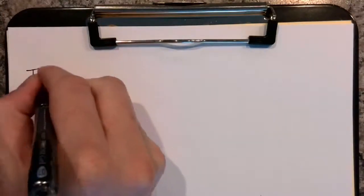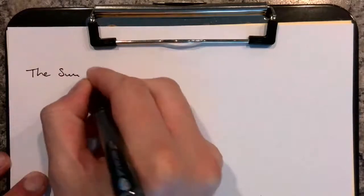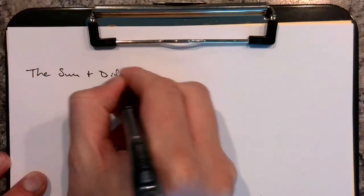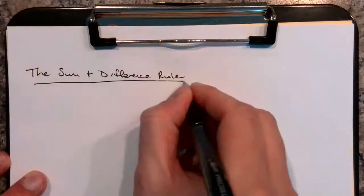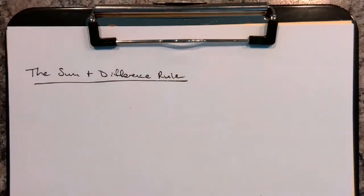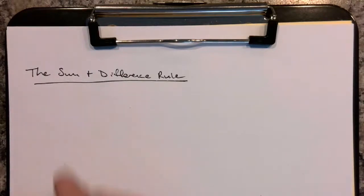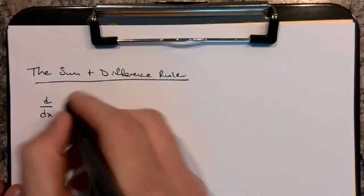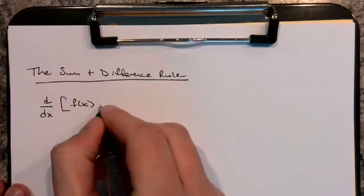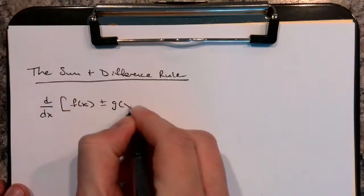This video is on using the sum and difference rule for derivatives. The sum and difference rule has to do with if you had two functions being added or subtracted and you wanted to take the derivative of that. What you do is take the derivative of each function individually. So what it really says is: if you have the derivative with respect to x of some function f(x) plus or minus g(x),